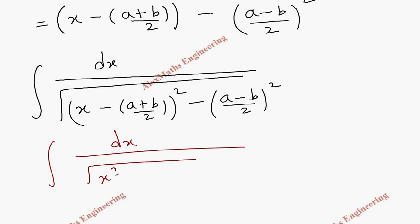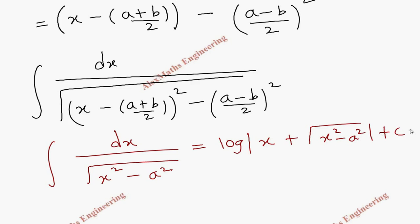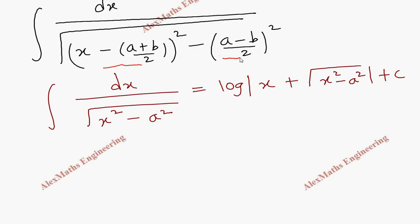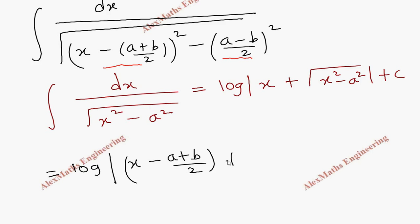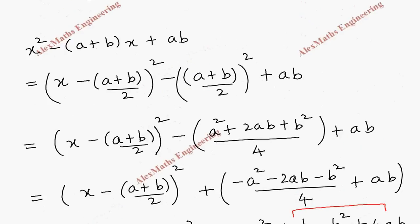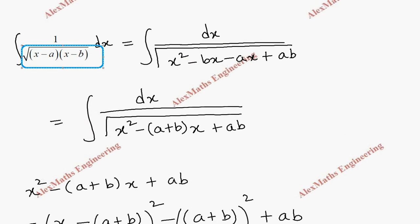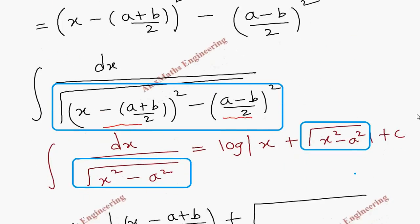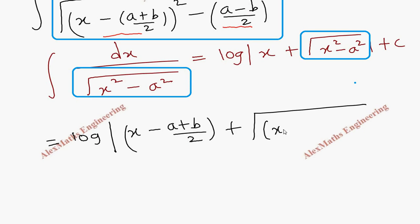This is of the form integral dx by root of x² − a², whose formula is log|x + √(x² − a²)| + C. Here the entire term (x − (a+b)/2) plays the role of x, and (a−b)/2 plays the role of a. So the answer is log|(x − (a+b)/2) + √((x−a)(x−b))| + C, writing the original denominator in simplest form.